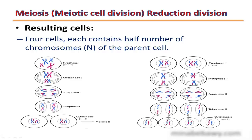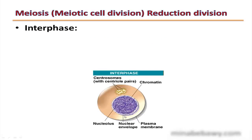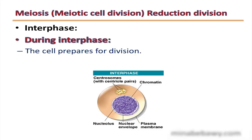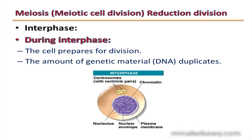This is the first stage of meiosis and this is the second stage of meiosis. As you can see, we have four cells, each containing only half the number of chromosomes. Before the cell undergoes meiosis division, it undergoes interphase, in which the cell prepares for division and the amount of genetic material, DNA, is duplicated.